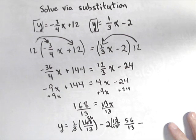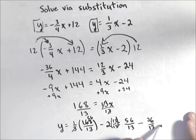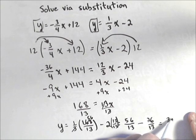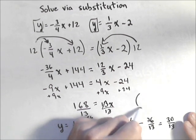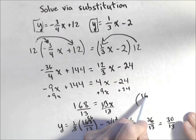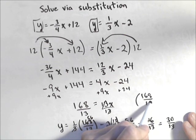So I remember the little trick of multiplying by 13 over 13, so minus 26 over 13, and I get that my y coordinate is 30 over 13. So my intersection occurs at 168 over 13, comma 30 over 13, and that's the solution to my system.